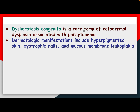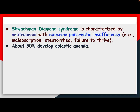Dyskeratosis congenita is a rare form of ectodermal dysplasia associated with pancytopenia. Dermatological manifestations include hyperpigmented skin, dystrophic nails, and mucous membrane leukoplakia. Schwachmann-Diamond syndrome is characterized by neutropenia with exocrine pancreatic insufficiency causing malabsorption, steatorrhea, and failure to thrive. About 50% develop aplastic anemia.